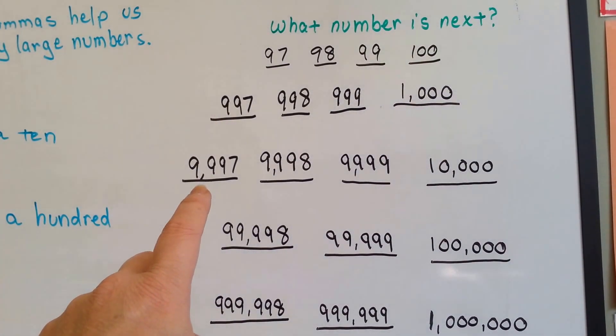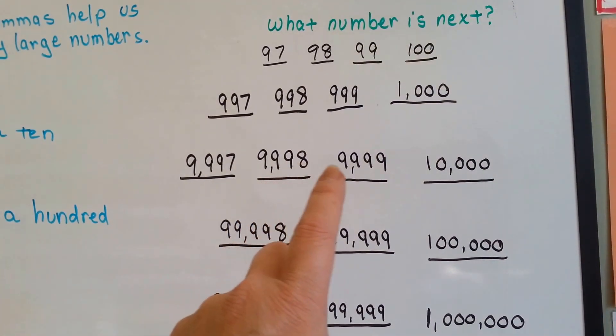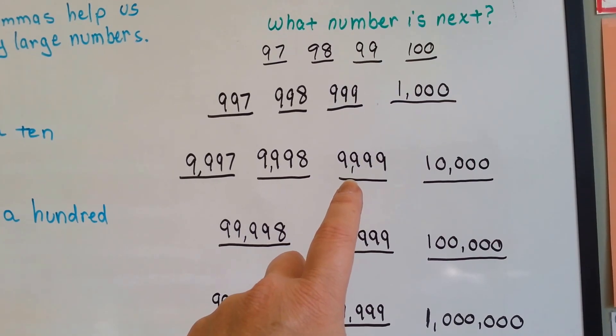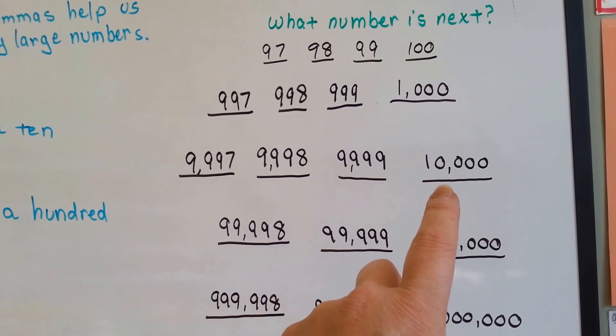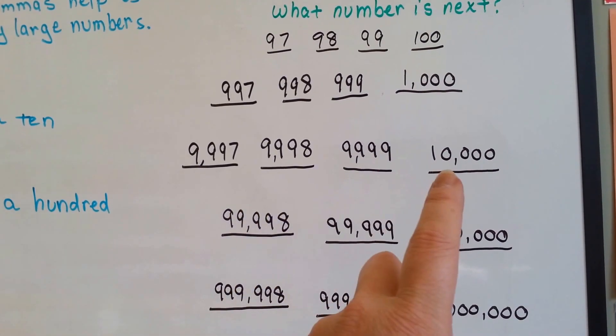Here we've got 9,997, 9,998, 9,999, and the very next number would be 10,000. That's just adding one more. See each time we added just one more?